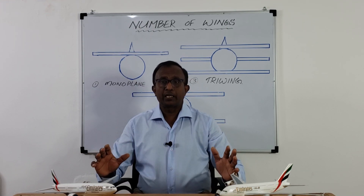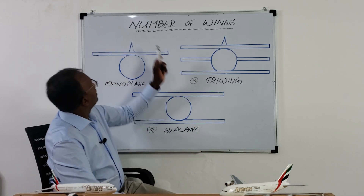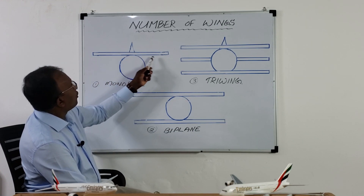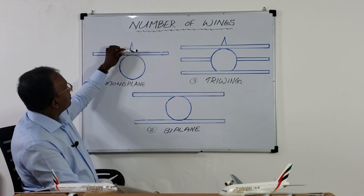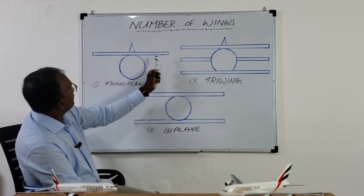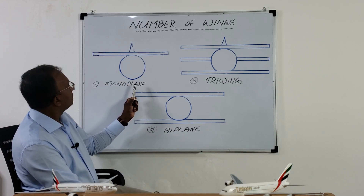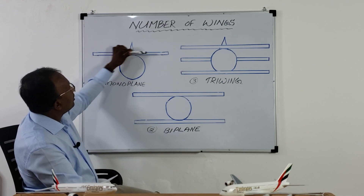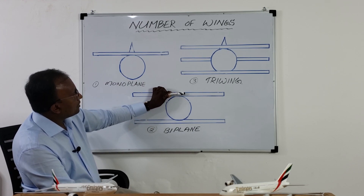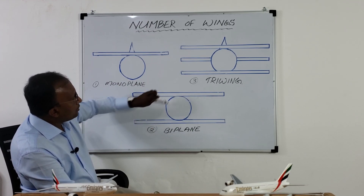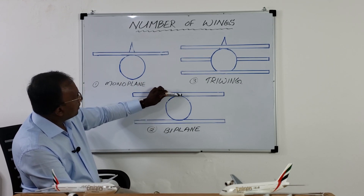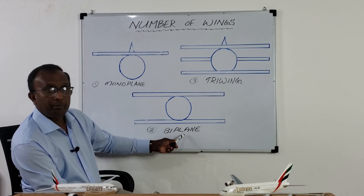Let's see number of wings. This is only one wing — this is the wing, this is the fuselage — so this type is called a monoplane. Only one wing. This one is having two wings: one on top of the fuselage and one on the bottom. So this type of aircraft is called a biplane.